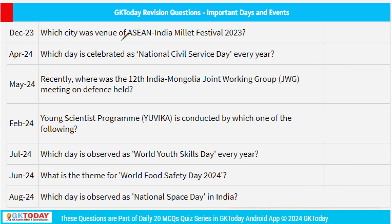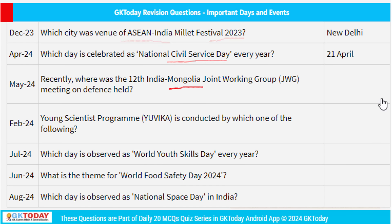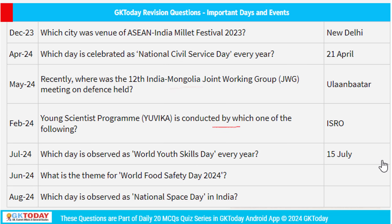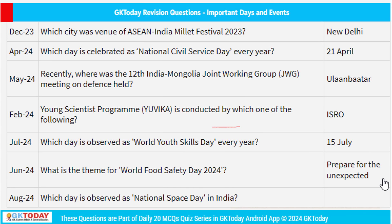Important Days and Events: the Asian India Millet Festival 2023 was held in New Delhi. National Civil Service Day is celebrated on 21st April to honor civil servants. The 12th India-Mongolia Joint Working Group Meeting on Defence was held in Ulan Baatar, Mongolia. The Young Scientist programme is conducted by ISRO. World Youth Skills Day is observed on 15th July. World Food Safety Day is on 7th June with the 2024 theme 'Prepare for the Unexpected.' National Space Day in India is observed on 23rd August.